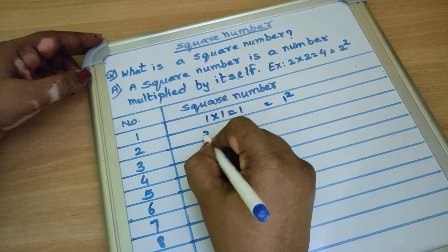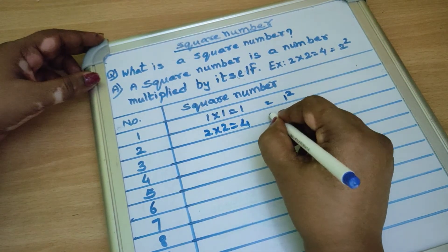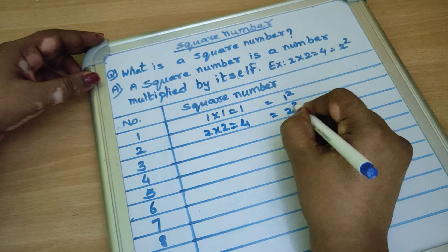And 2, 2 into 2, 4. We write as 2 square.